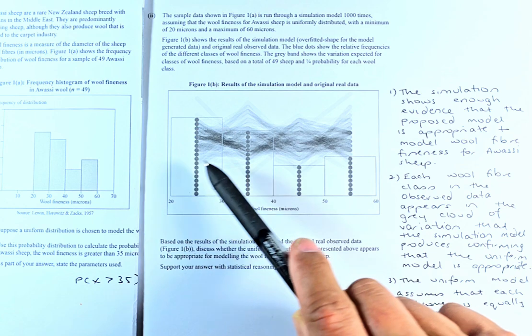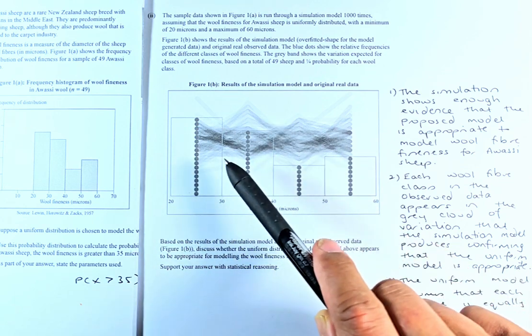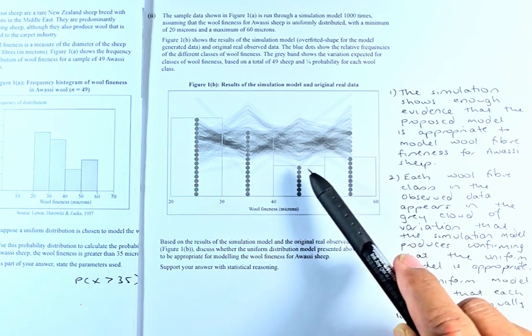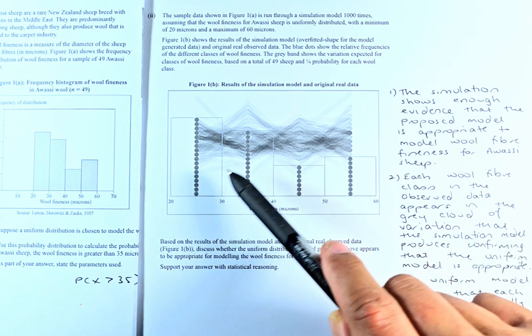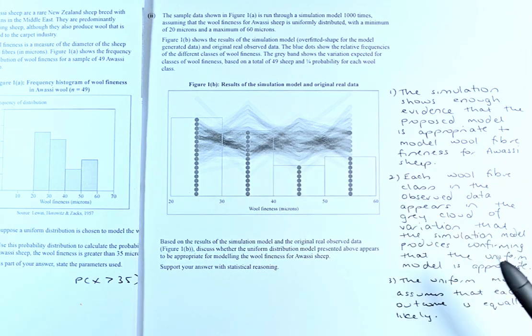You can see this grey model, everybody has an equal chance of getting into the first column, second column, third column or fourth column. So that's what they say, there's an equal chance for them to appear in any of them. That is how they answer that.